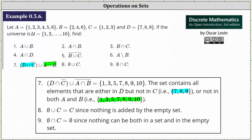Now that we have D intersect C complement ({7, 8, 9}) and the complement of A intersect B ({1, 3, 5, 7, 8, 9, 10}), we need to find their union — the set containing the elements in either set or both. Combining these two sets, the final answer for number 7 is the set containing 1, 3, 5, 7, 8, 9, 10.